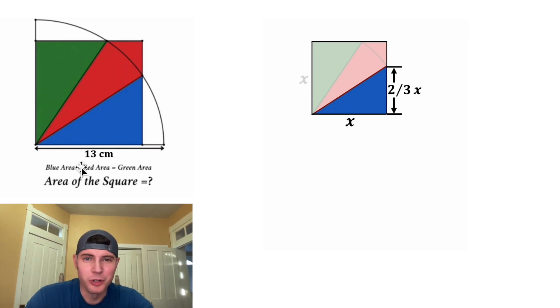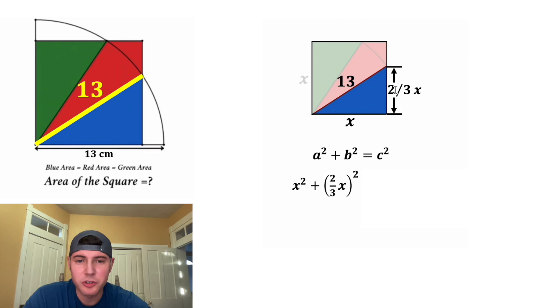And now let's play around with the quarter circle. The radius of this quarter circle is 13, and that's going to be true all the way up here. So this length is equal to 13, and that means the hypotenuse of our triangle is also 13. And now we can do Pythagorean theorem. So we have a squared plus b squared equals c squared, or in this case, it's x squared plus two-thirds x squared is equal to 13 squared.